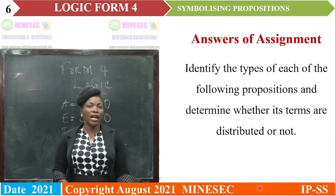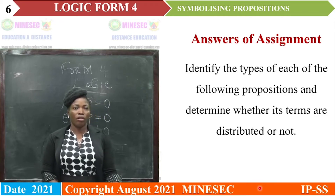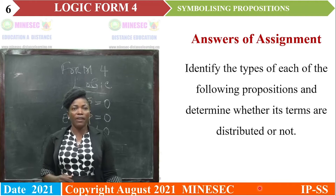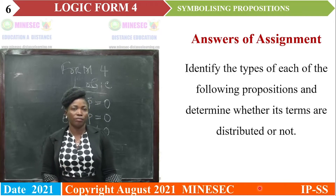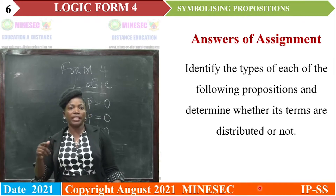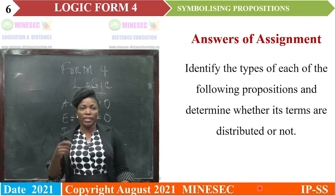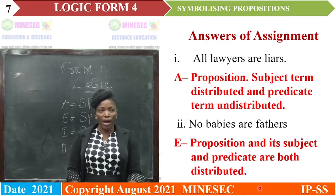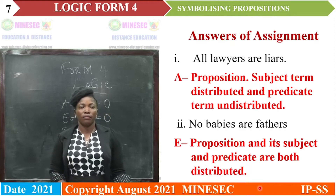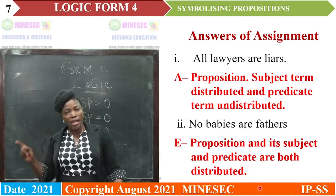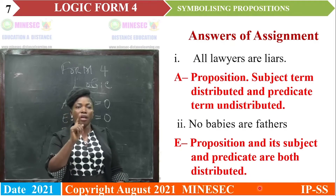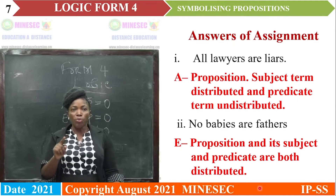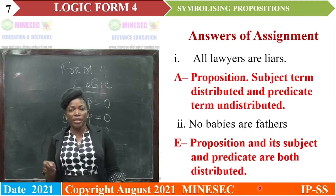My dear learners, this is the answer. The question was: identify the types of each of the following propositions and determine whether terms are distributed or undistributed. Number 1: All lawyers are liars. Given 'All lawyers are liars,' we consider it an A proposition. The A proposition distributes the subject term and undistributes the predicate term.